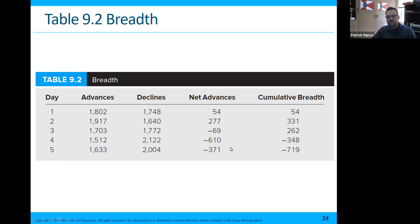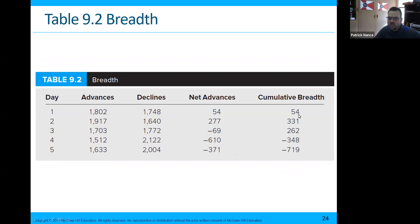The breadth is the total difference between advances and declines — whether we have a net advance or net decline for day one versus day two — and then the cumulative breadth of all of it. This would be like a running total over here. So on day one we've got 54 advancing. We have 54 and 277 to get our 331, subtract 69 to get our 262. The cumulative breadth is negative 610, which takes us down to negative 348, and so on — that running total column is the cumulative breadth.